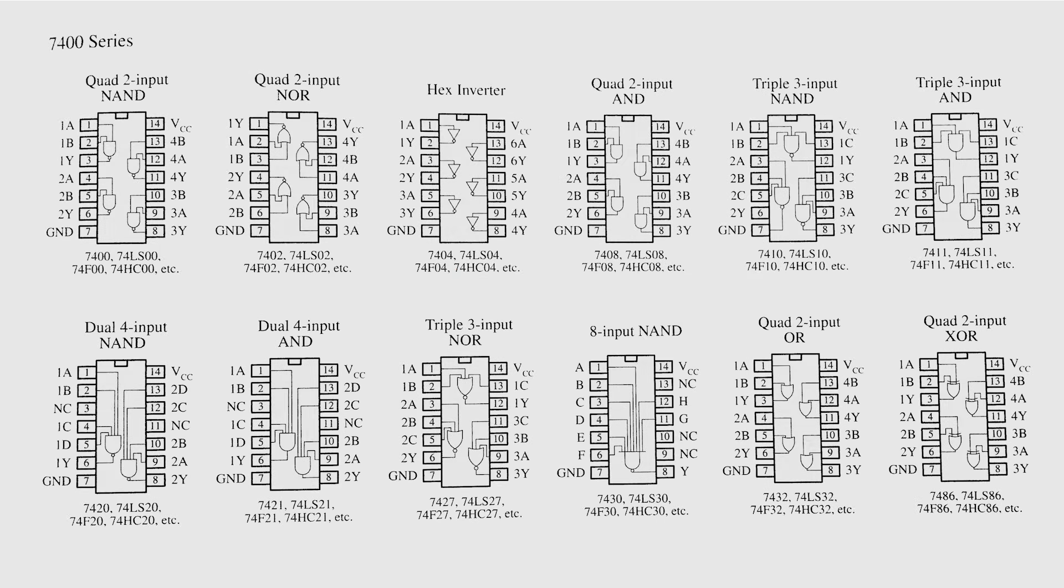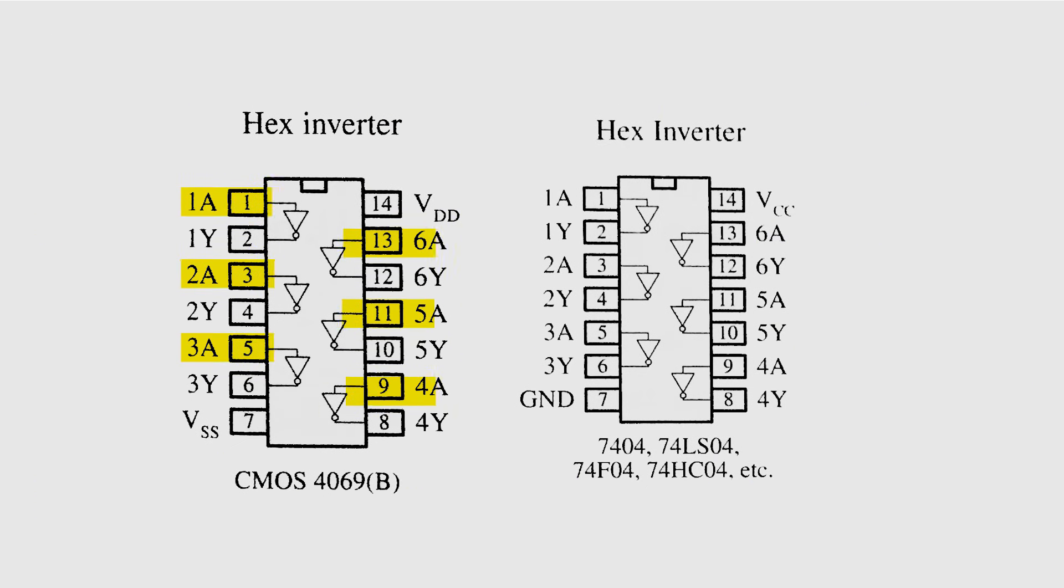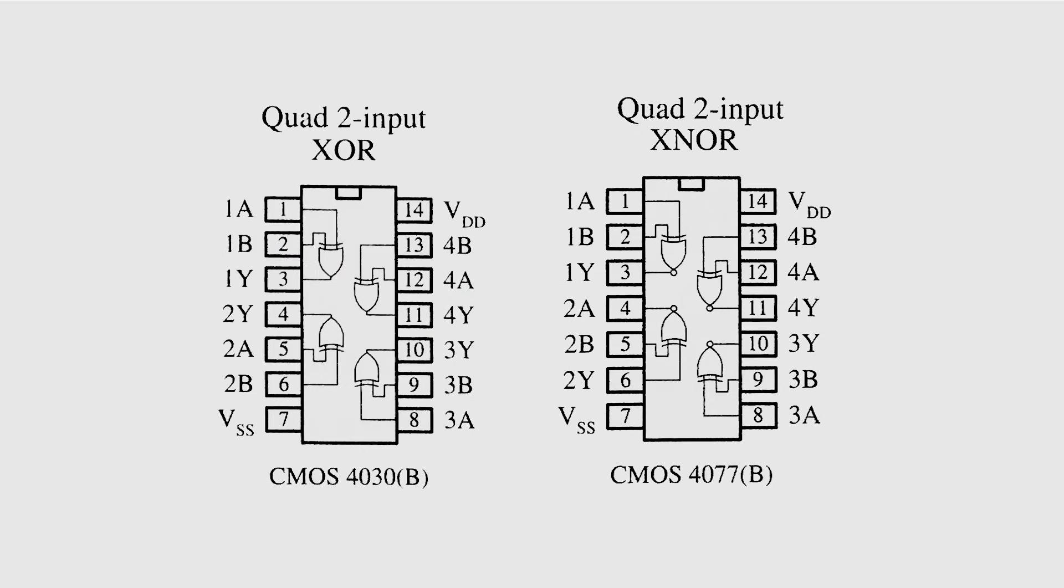So, logic gates come packaged in ICs with multiple gates in each chip, and usually have at least one pin for input voltage and one pin for ground. Since NOT gates only ever have one input and one output, that leaves room for six NOT gates in a 14-pin IC, so these chips are called hex inverters.